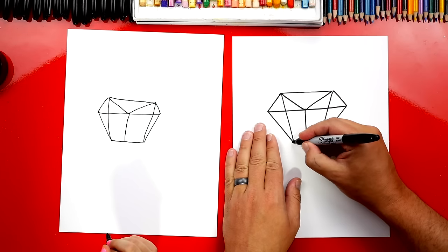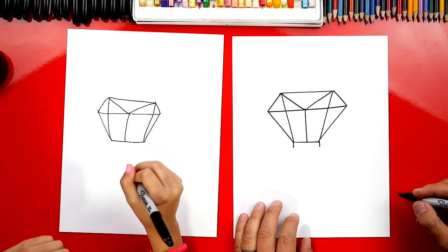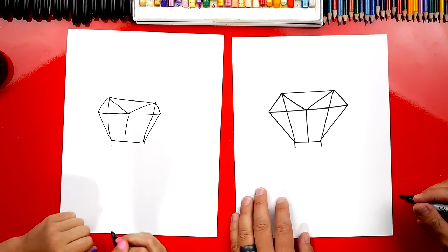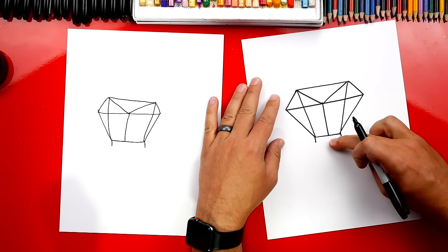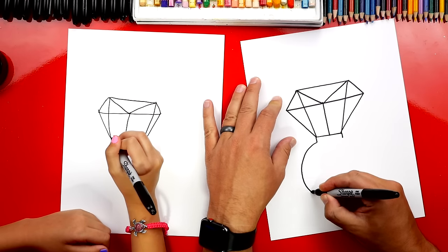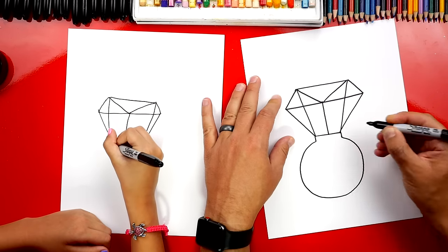Now we need to draw the ring. Let's draw a short line that comes down on each side. Good. And then we're going to draw a big circle and we're only going to draw part of it because we're going to leave a gap here at the top. So we're going to draw a circle. It comes around like this, around, back up and connect to the other side.